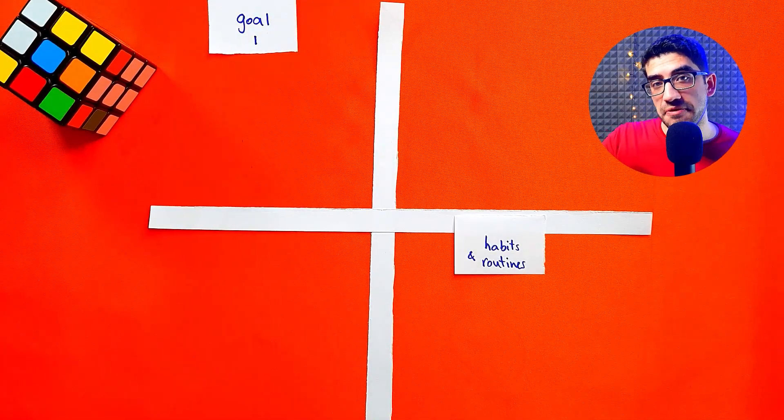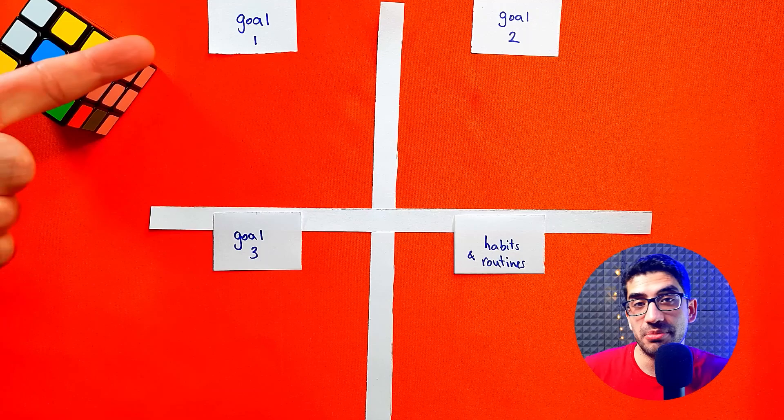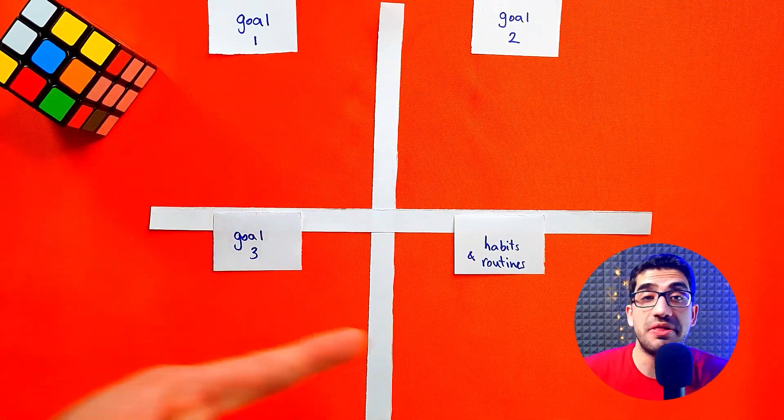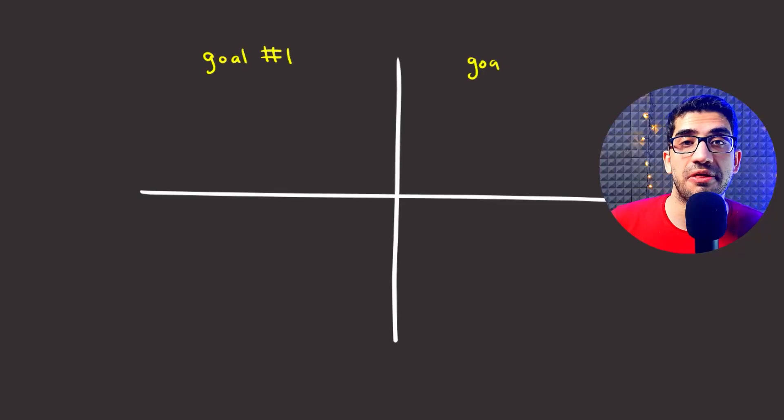Each of the first three quadrants corresponds to each of your first three goals. Remember that their order is according to their importance. And if you have fewer than three goals, you can use fewer quadrants.